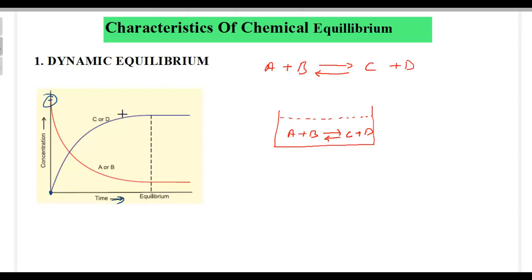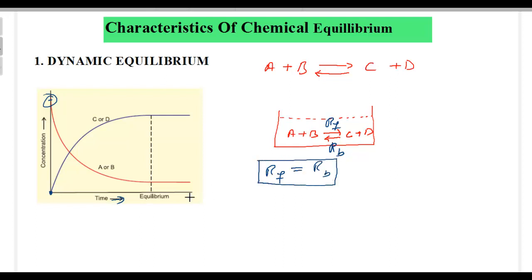But once you attain the equilibrium — what does equilibrium mean? Equilibrium means the rate of the forward reaction should be equal to the rate of the backward reaction. So the rate at which A and B are decomposed will be equal to the rate at which A and B are again formed. Which means that once you attain the equilibrium, once the rate of forward reaction equals the rate of backward reaction, the concentration of the reactants does not change.